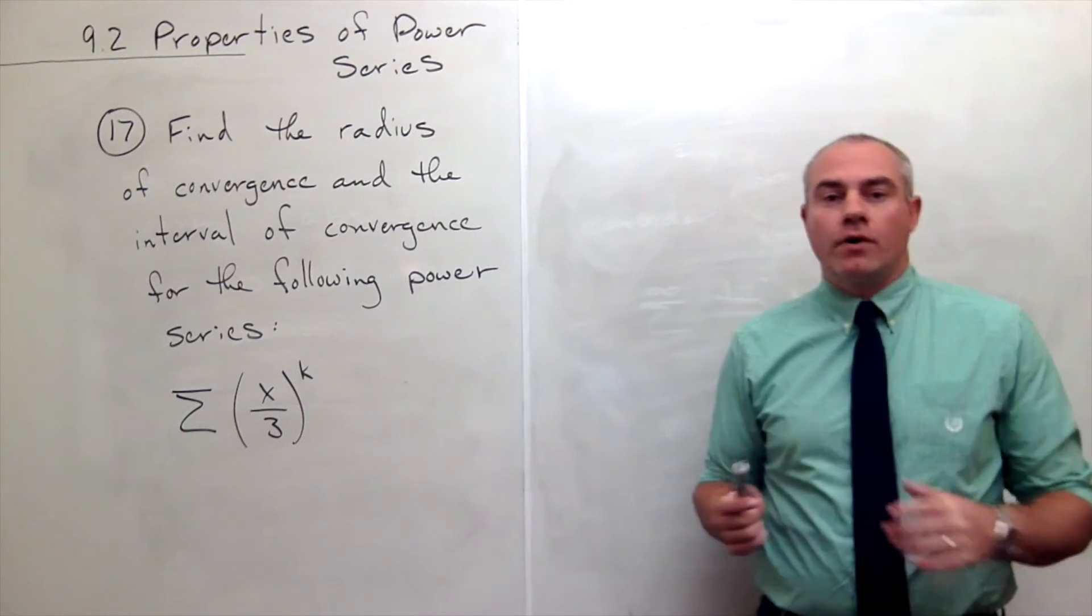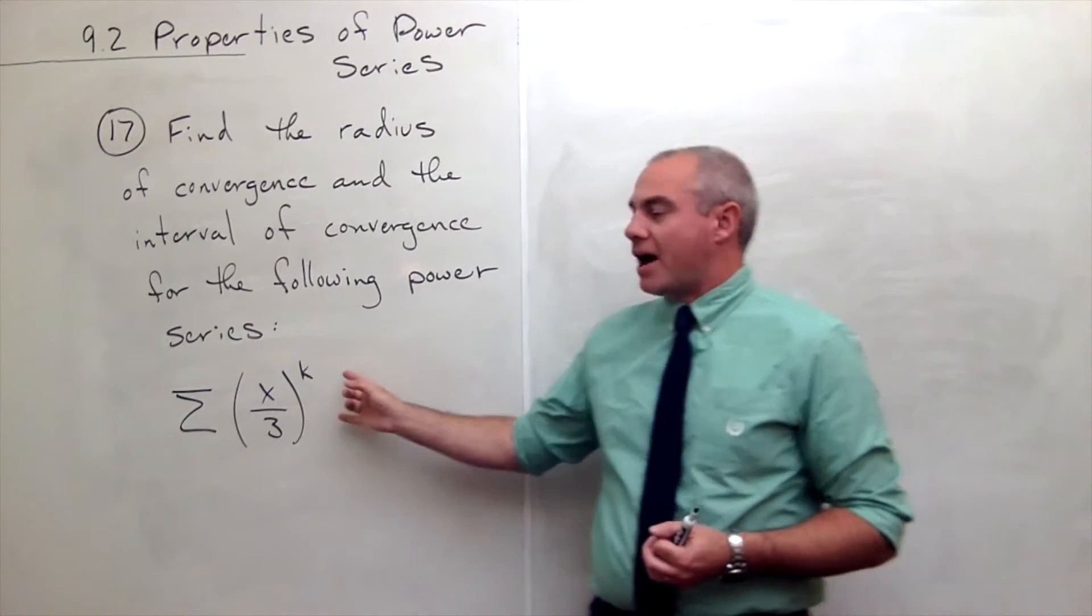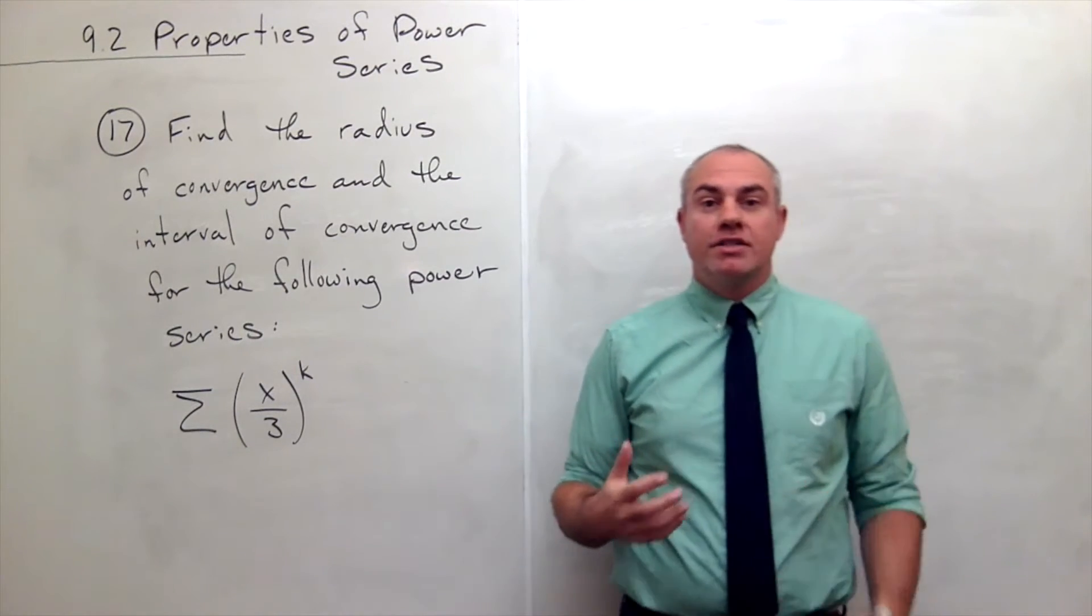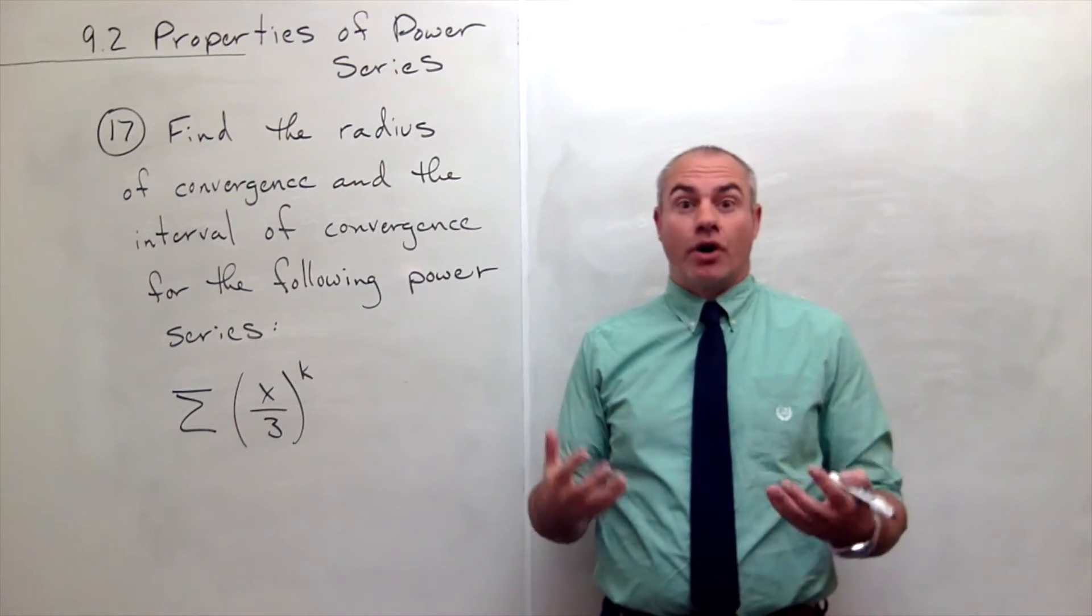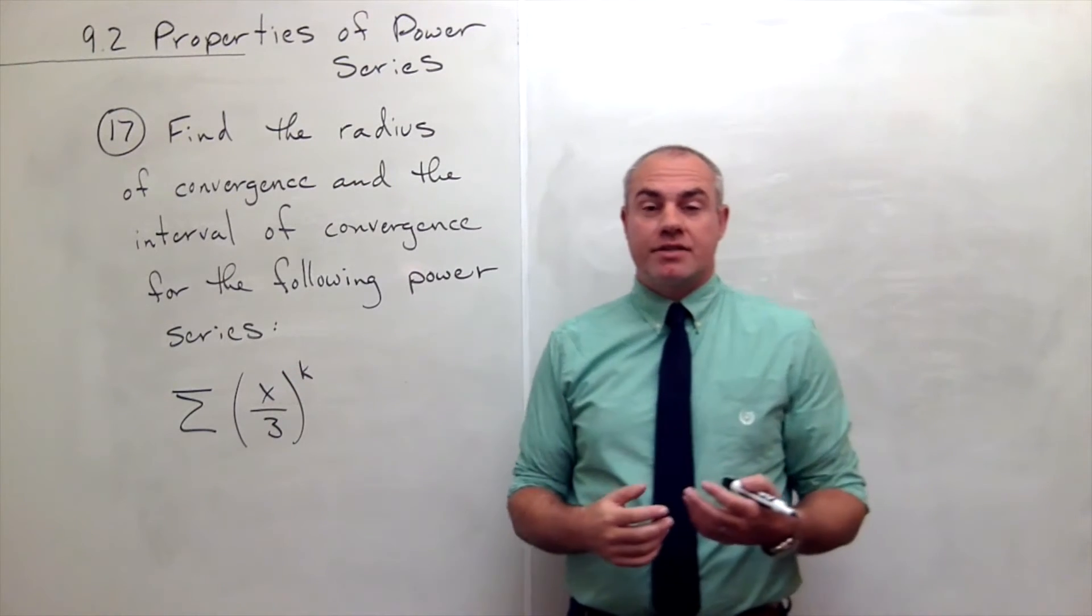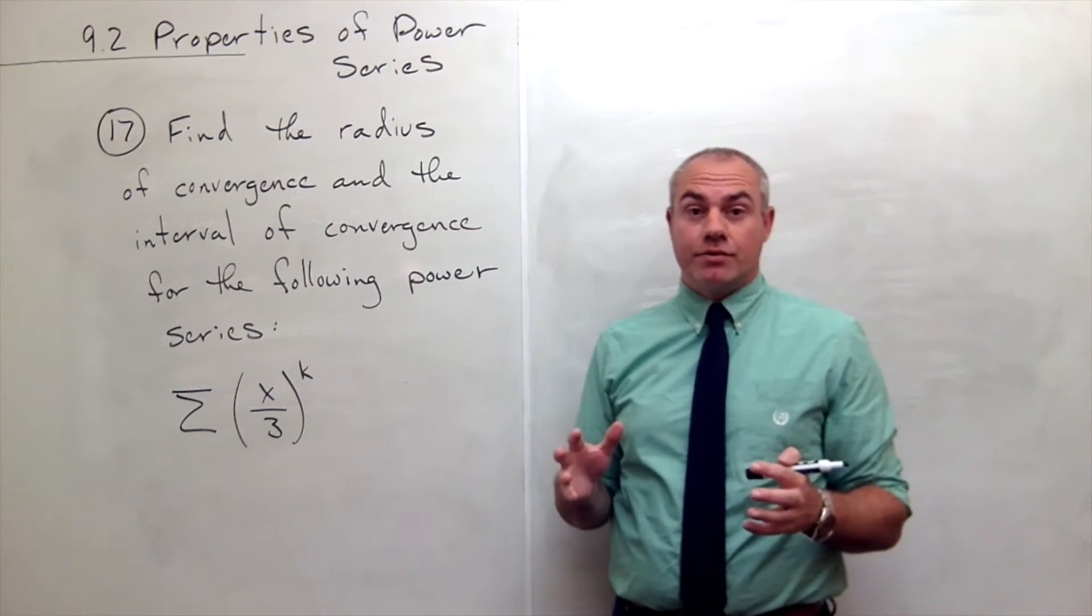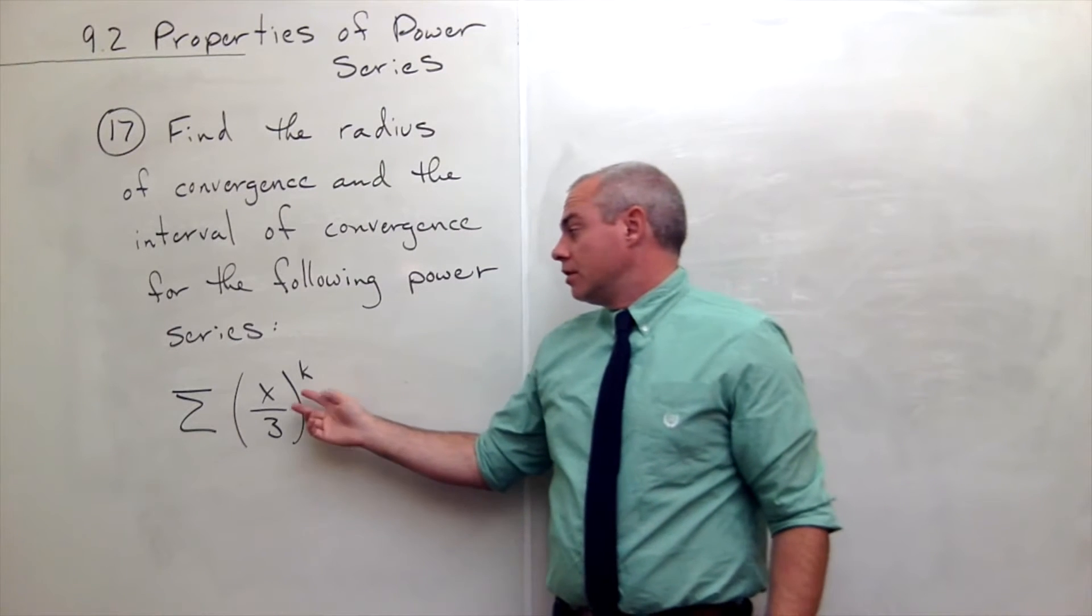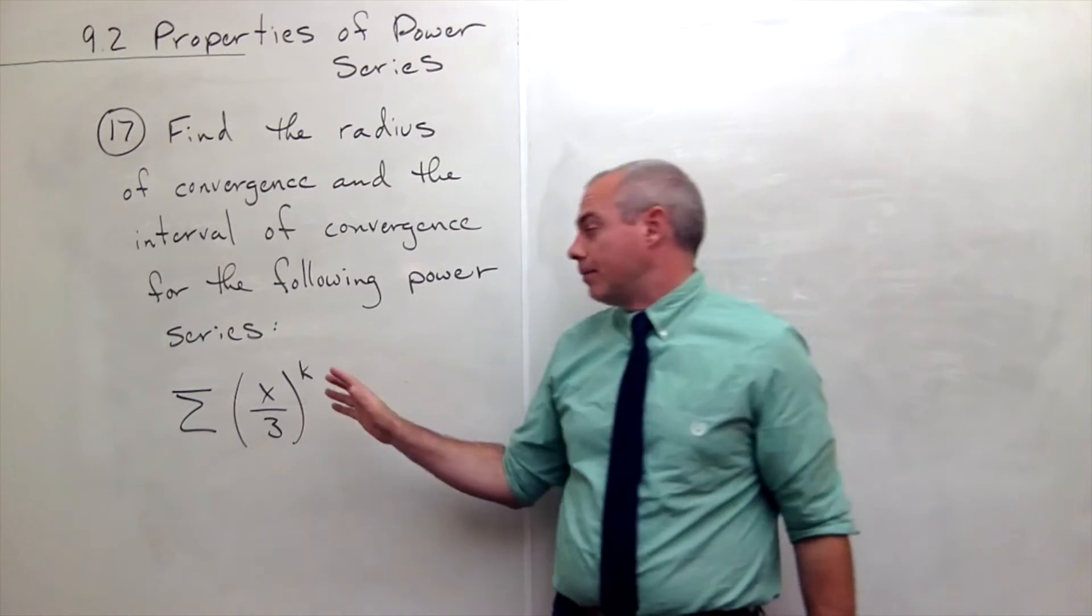To find the radius of convergence and interval of convergence for a power series, I need to use one of the tests to figure out which x values will give me convergent series. The test that's most often used is the ratio test. So let's use the ratio test here.